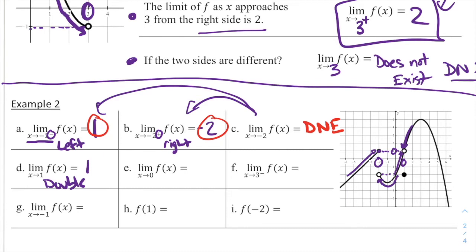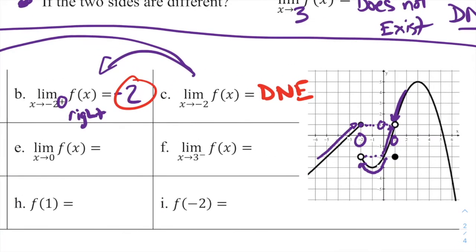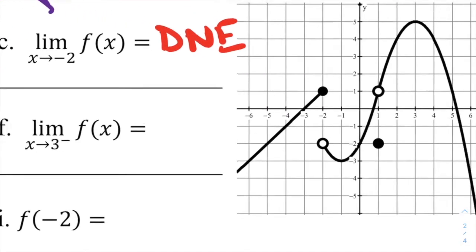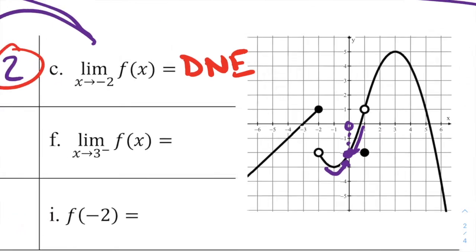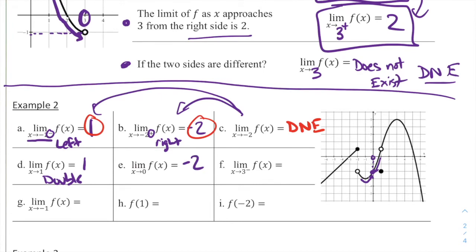For part E: the limit as x approaches 0 of f of x. On this graph, x equals 0 is the origin. From the left and from the right, we're going towards the same point, which has a height of negative 2. So negative 2 is my limit as x approaches 0 of f of x, because from both the left and the right, they're going to the same y value of negative 2.